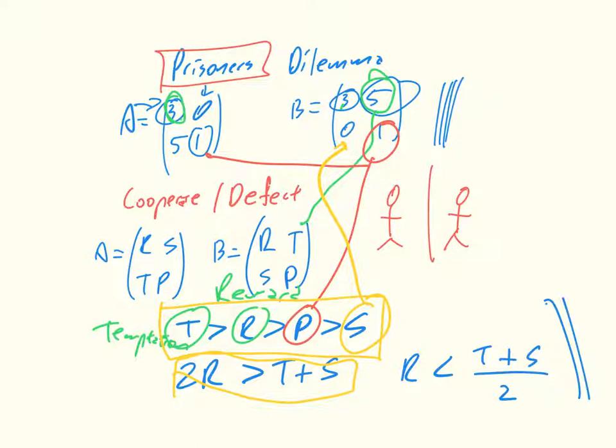So if we look here, defection is the second row, and we indeed have that T is greater than R and P is greater than S. So defection always dominates.